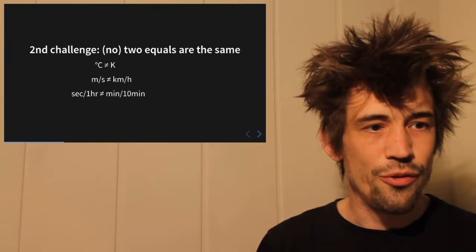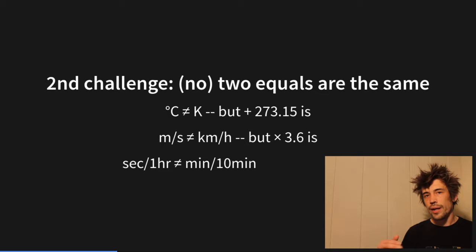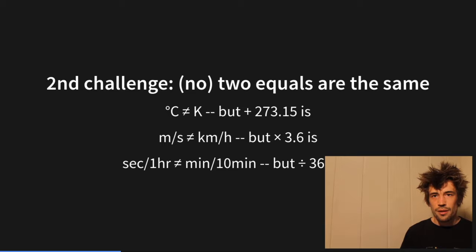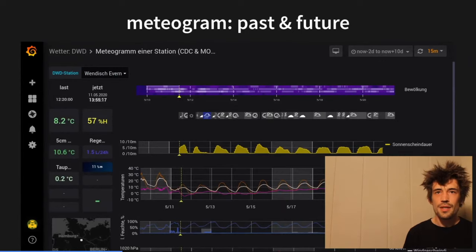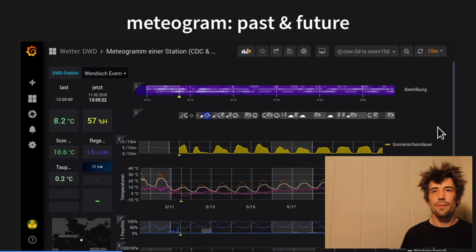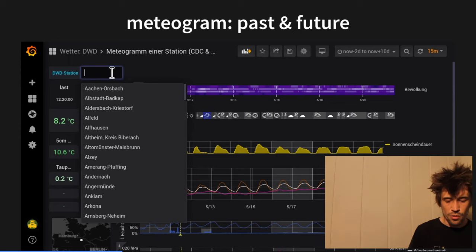Every unit has its equation in the other unit, and when querying our database we do that calculation already within the query — InfluxDB is our data horse here and does the calculation. I've just heard that Grafana 7 will do that kind of data transformation at a higher level between series, and I'm very curious about that.